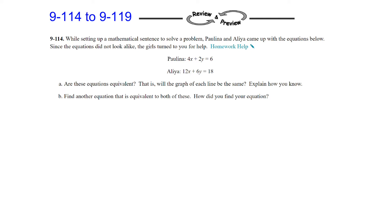While setting up a mathematical sentence to solve a problem, Paulina and Aaliyah came up with the equations below. Since the equations did not look alike, the girls turned to you for help. You see Paulina's equation and Aaliyah's equation. Are these equations equivalent? That is, will the graph of each line be the same? Explain how you know.